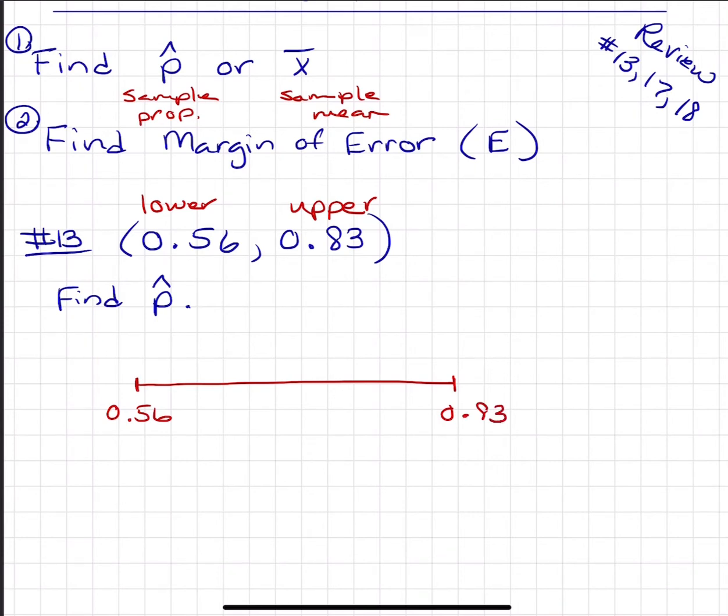You're using your sample proportion or sample mean, depending on what type of problem you have, to estimate the population. So here for number 13, we're trying to find sample proportion that's going to be right here, dead center between 0.56 and 0.83.